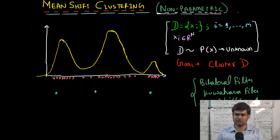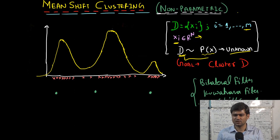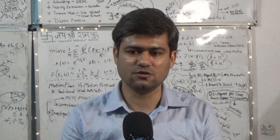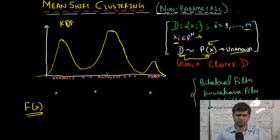Let's assume we have a data set with m data points x_i, where each x_i is an n-dimensional real vector. This data set is generated using an underlying probability density function p(x) which is unknown — we do not have access to the true density function, only the data generated by it. The kernel density estimator, denoted f(x), empirically approximates this underlying true density function. By finding the modes of this kernel density estimator function, we can cluster the data set.